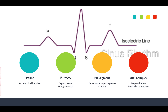Your P wave occurs first and represents depolarization moving through the atria, resulting in atrial contraction. P waves are normally upright and round, with a rate of about 60 to 100 — the same as your QRS. You get one P wave for every QRS complex. The P-to-R segment is that pause as the impulse passes through the AV node. Then you get your QRS complex, which is the depolarization moving through the ventricles — your ventricles are contracting, which is your systole.